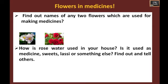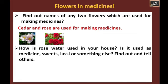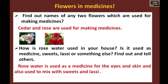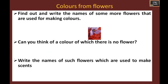Flowers are used to make medicines as well. Find out the names of any two such flowers which can be used for making medicines. Two examples are cedar and rose. How is rose water used in your house? It is used as a medicine for the eyes and skin, and it can also be mixed with sweets and lassi.